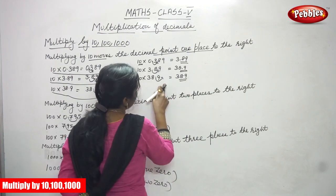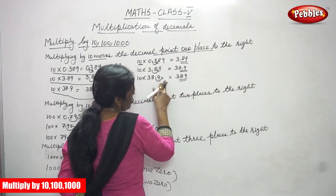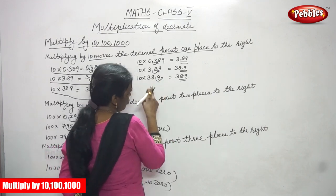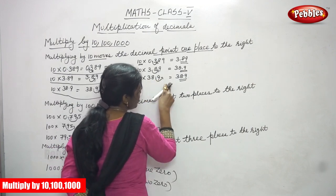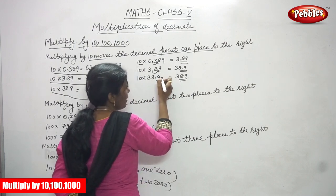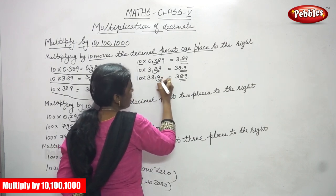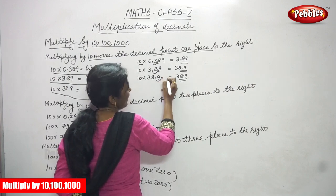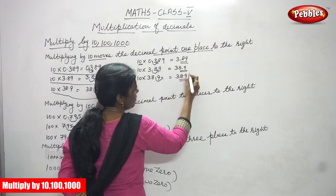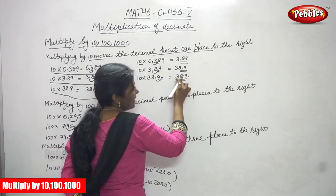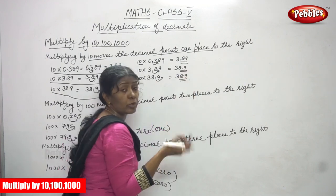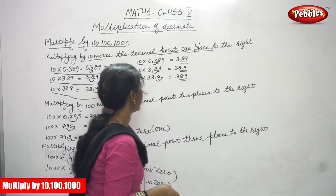10 into 38.9 — this decimal point moves one place to the right. That means this point goes after the 9. After the 9, 38.9 becomes a whole number — 389. After that you put a point, but there are no digits, so no need to put a point because it is completely a whole number.